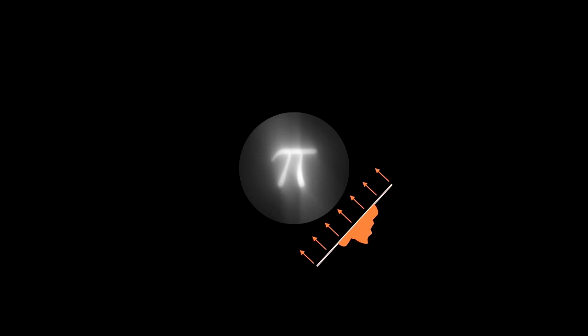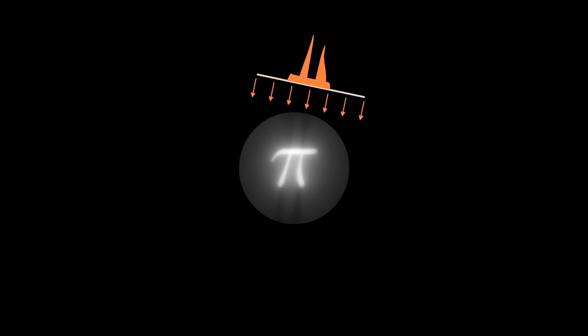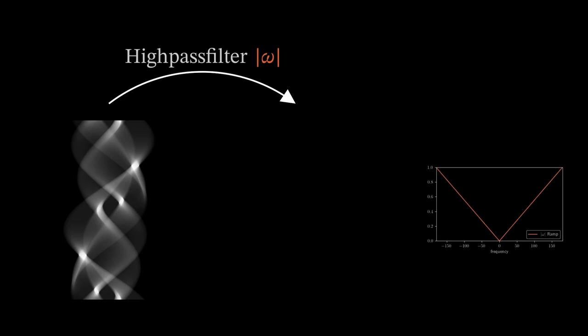As blurriness comes from low frequencies, can we maybe get a better result by filtering the sinogram by a high-pass filter? Let's try this. We take our sinogram and apply a linear high-pass filter to it, as it is shown in the plot on the right.